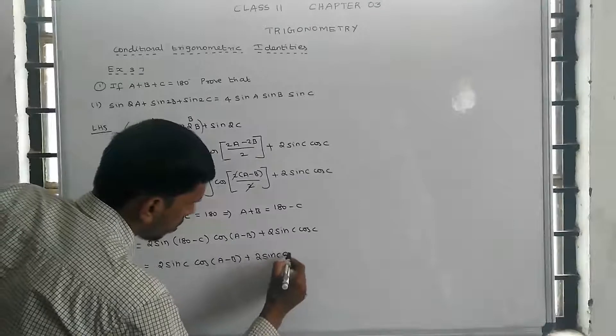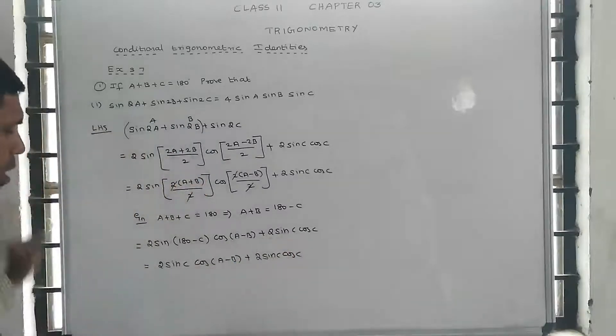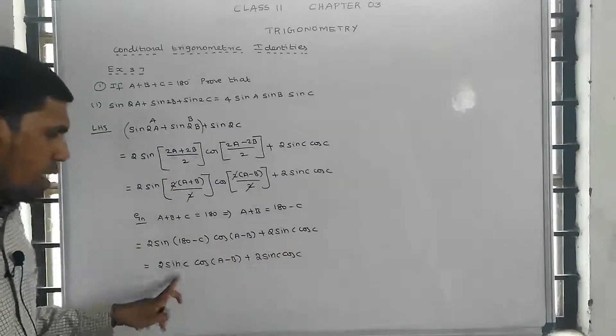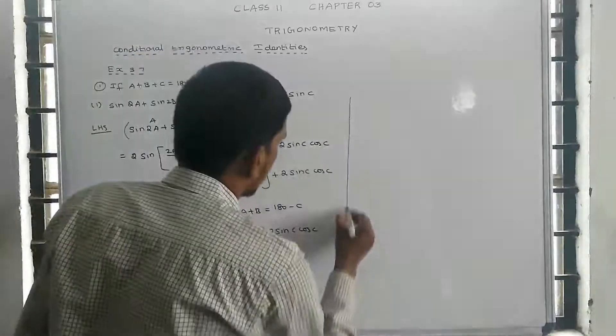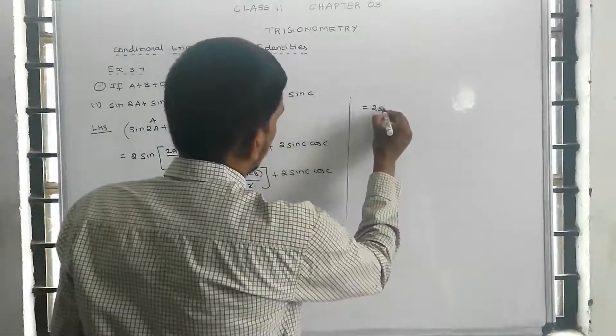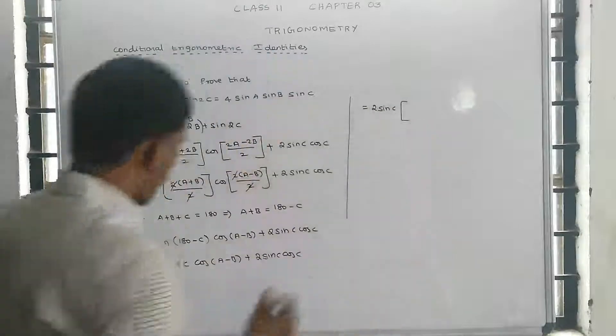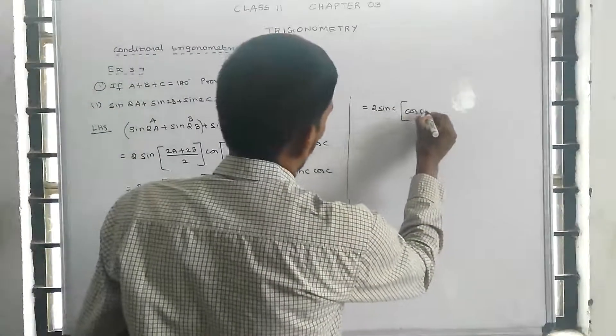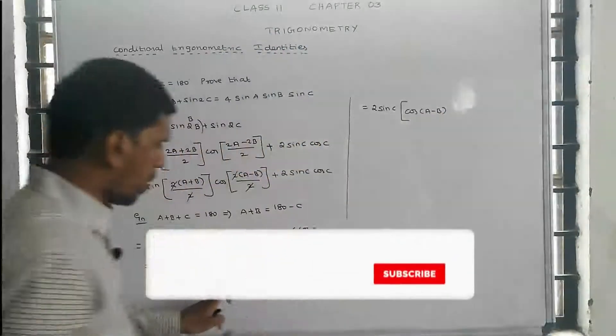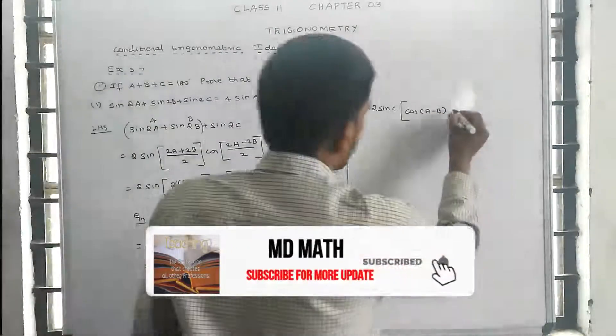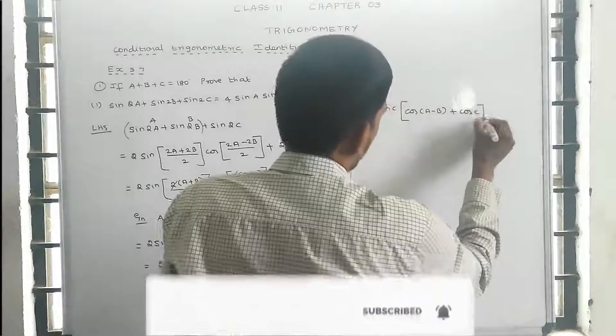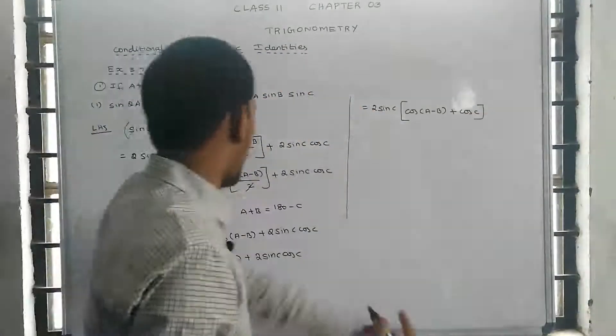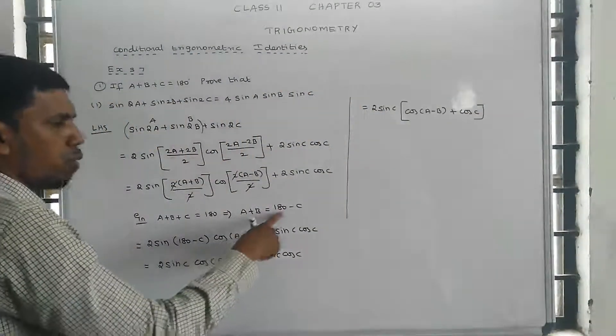Since c = 180 - (a+b), we have 2 sin c times [cos((a-b)/2) + cos(180 - (a+b))].